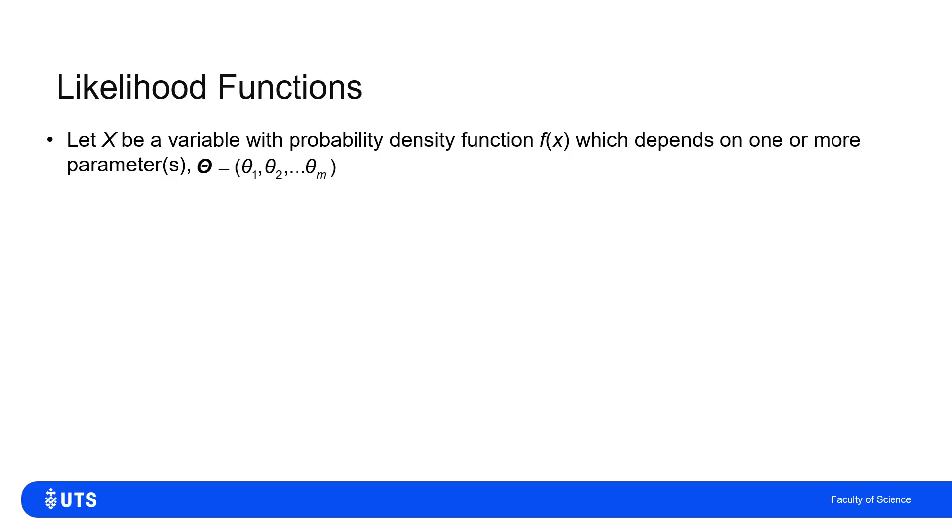Let's say that we have a variable X. I'm assuming it's continuous here, so it has probability density function f of X, and this depends on at least one parameter, so maybe it's just one parameter theta_1, maybe it's theta_1, theta_2, or maybe it's many parameters.